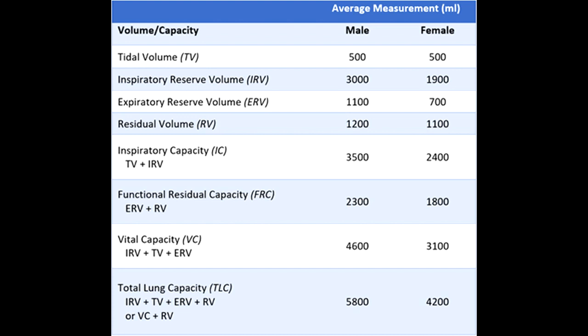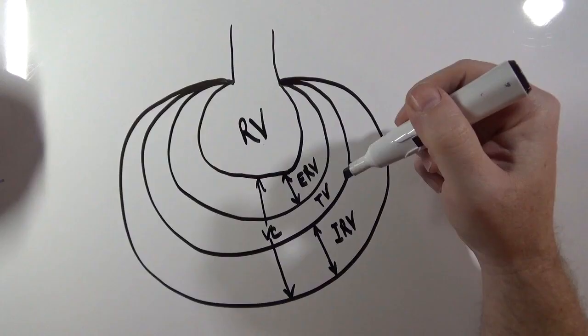Certain respiratory diseases will cause certain measurements to change. In this video, I'll start to explain and illustrate some of the basic lung volumes and capacities using a balloon diagram. This will help you begin to understand and use them to assess someone's respiratory function.